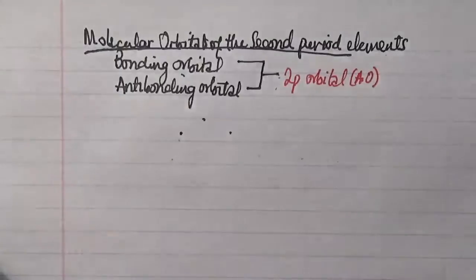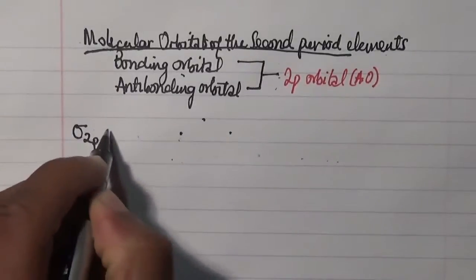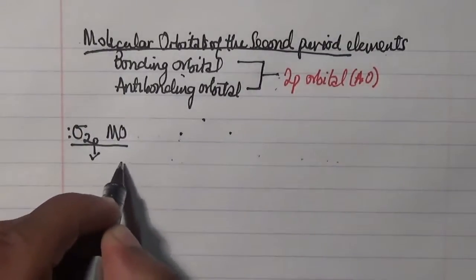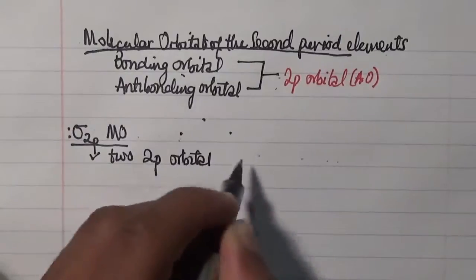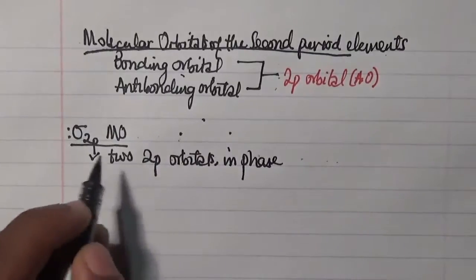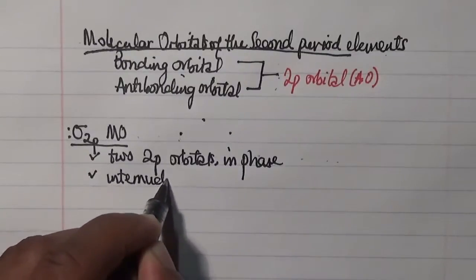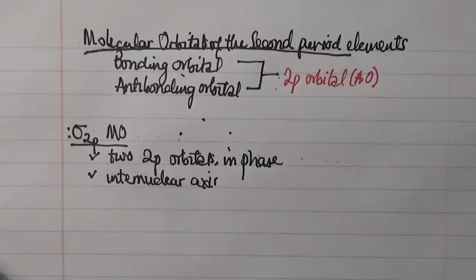First, the formation of the sigma 2p molecular orbital will be evaluated. This is the result of the addition of the 2p orbitals that are in phase and are placed along the internuclear axis of the two atoms coming closer together.